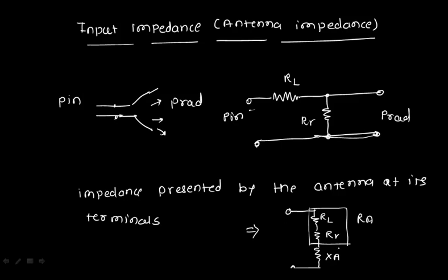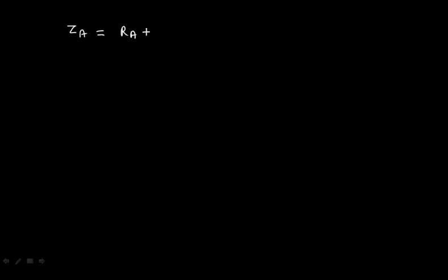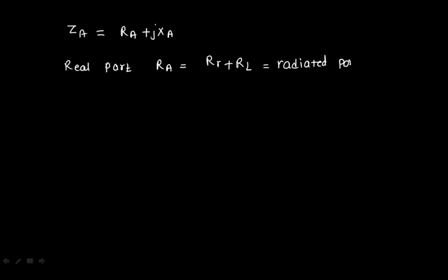The total antenna impedance Za is equal to Ra plus jXa. The real part Ra equals the radiation resistance Rr plus the loss resistance Rl — representing radiated power plus power dissipated. Xa is the imaginary or reactive part.